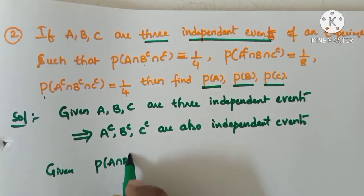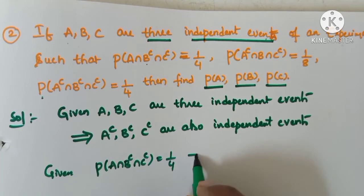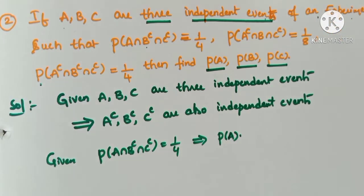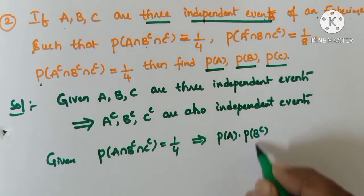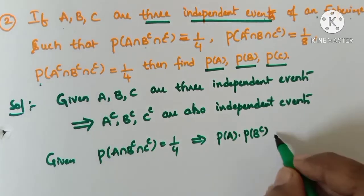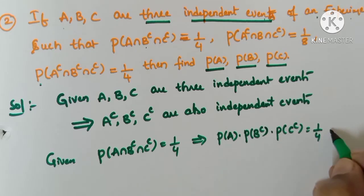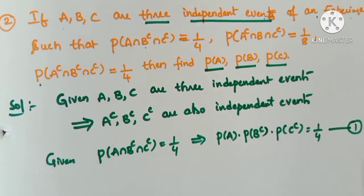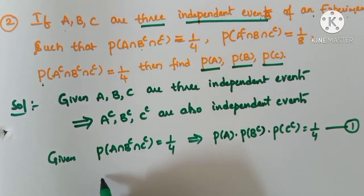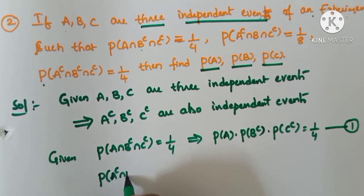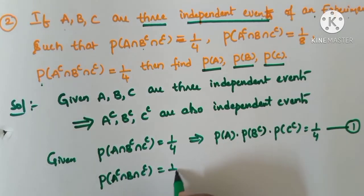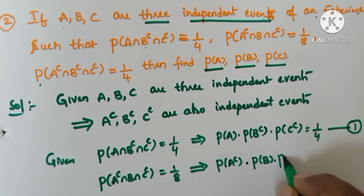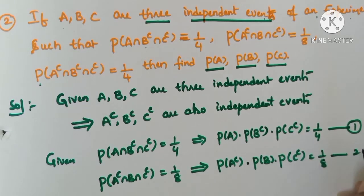The given probabilities are: P(A ∩ B' ∩ C') = 1/4 — this is equation 1, so P(A)·P(B')·P(C') = 1/4 using the multiplication theorem for independent events. Next, P(A' ∩ B ∩ C') = 1/8 — equation 2, so P(A')·P(B)·P(C') = 1/8.